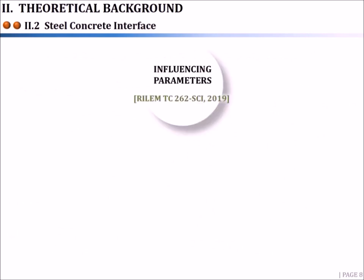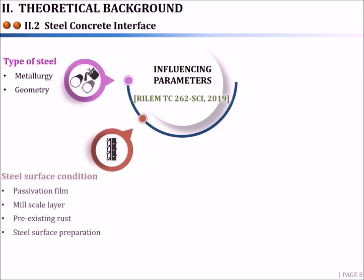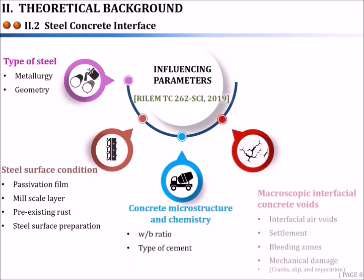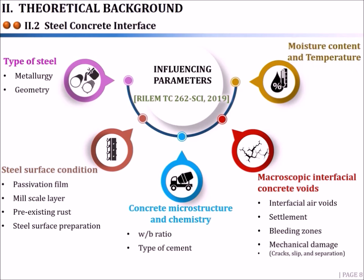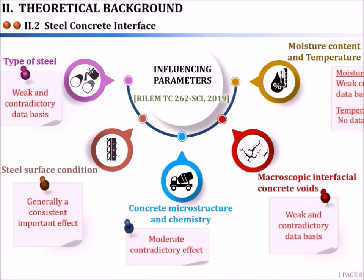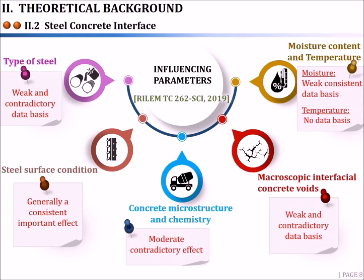The key answer lies in the investigation of the steel-concrete interface. According to a recently published paper by the RILEM Technical Committee 262, the influencing parameters were classified as factors related to the type of reinforcement bars, the steel surface condition, the concrete microstructure and chemistry, the macroscopic interfacial concrete voids, and the temperature and moisture content. The committee highlighted parameters with important or weak effects, consistent or contradictory effects. The steel surface condition is one of the most dominant parameters, while the influence of factors related to concrete, such as water-to-binder ratio and cement type, is moderate but reported results were contradictory.